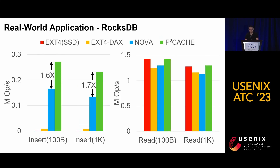Finally, for real-world applications, we selected the RocksDB case — you can find others in our paper. RocksDB is a persistent key-value store. We use single-thread for insert operations and eight threads for read operations. The figure shows that P2Cache greatly outperforms all other approaches for small writes due to its PM-specific logging mechanism. As we purposely conducted the read test after insert to have all records stored in DRAM, both P2Cache and EXT4 achieve higher read performance than EXT4-DAX and NOVA.